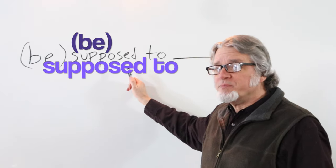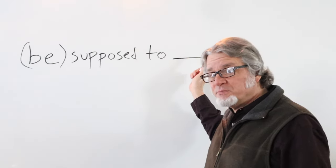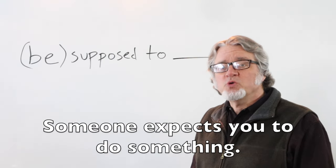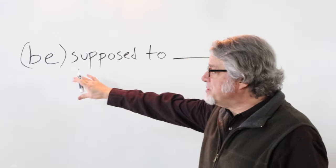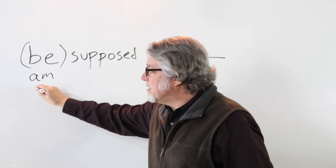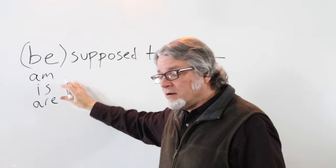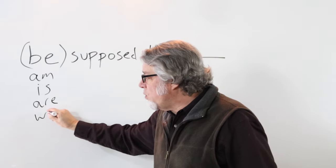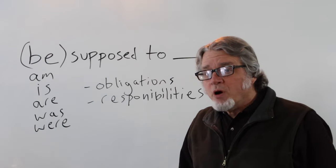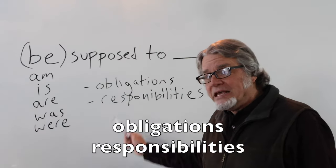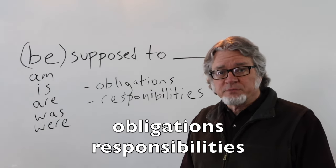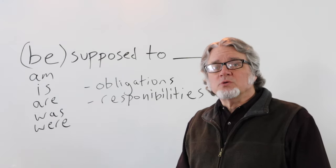Use 'be supposed to' and then the main verb when someone expects you to do something. The verb 'be' changes in the present tense and the past tense. 'Be supposed to' is used for obligations and responsibilities — someone expects another person or you to do something.